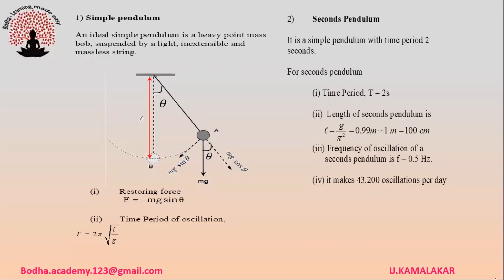An ideal simple pendulum is a heavy point mass bob suspended by a light, inextensible and massless string. The restoring force acting on the bob when it is pulled aside to a position A is given as F = −mg sinθ, where θ is the small angle subtended by the string with the vertical.